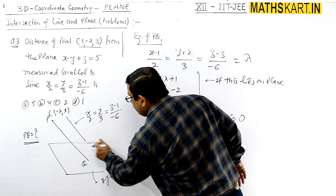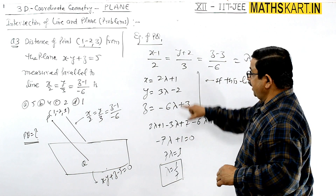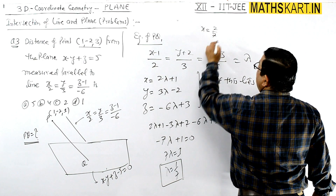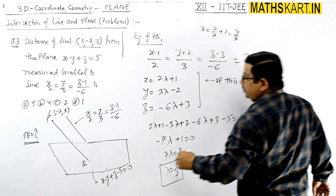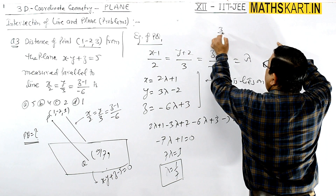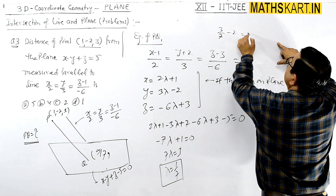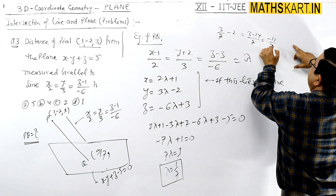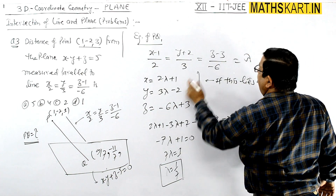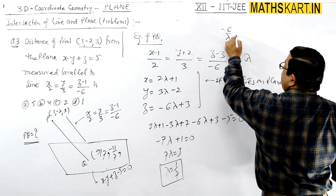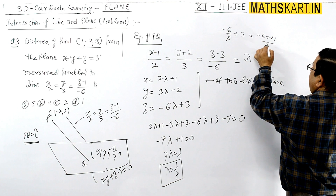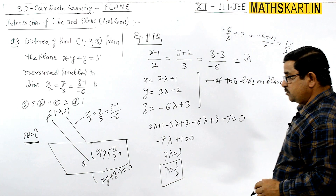With λ = 1/7, the coordinates of Q are: x = 2(1/7) + 1 = 9/7, y = 3(1/7) - 2 = -11/7, z = -6(1/7) + 3 = 15/7. So Q = (9/7, -11/7, 15/7).